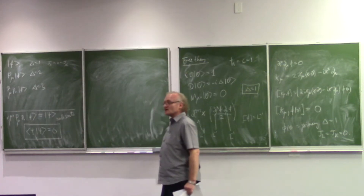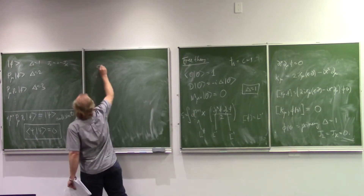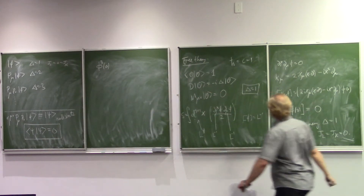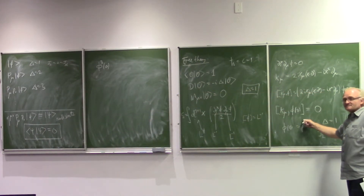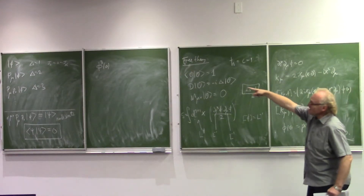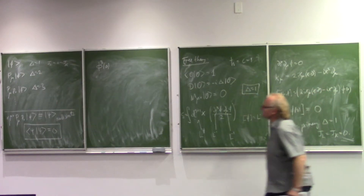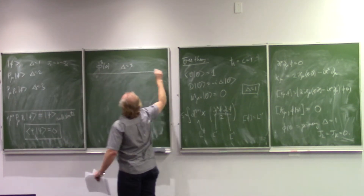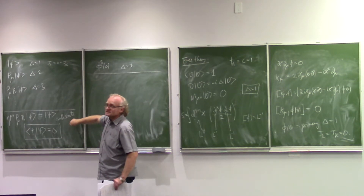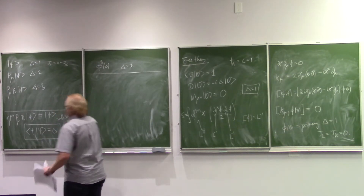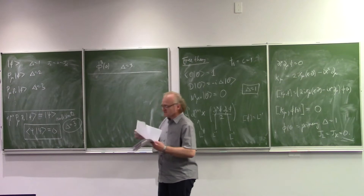There's another primary operator in the theory: φ³(0). You can check it's primary by the same argument. In fact, φ^n(0) is a primary operator for any n. The reason I specifically focus on φ³ is that it also has δ = 3 — the same dimension as our null state at level two in the multiplet of φ.